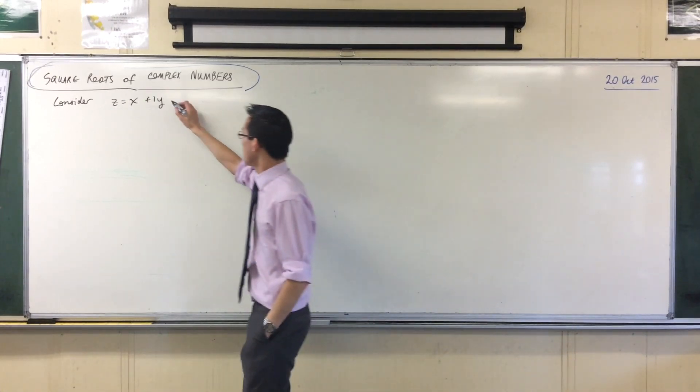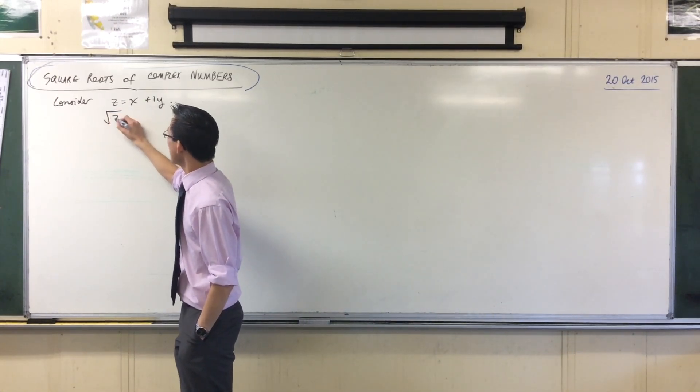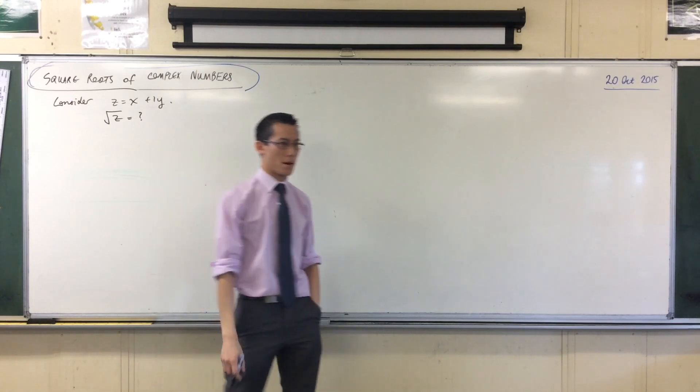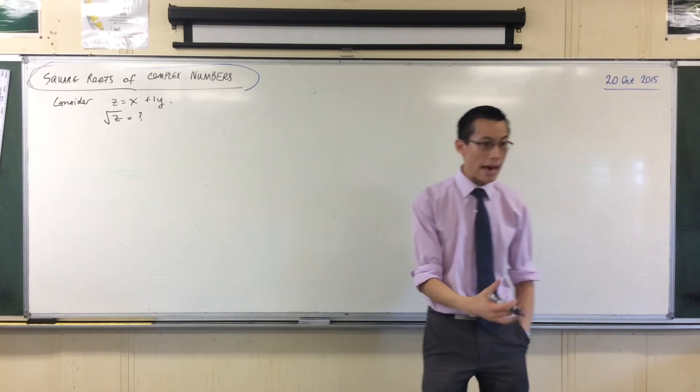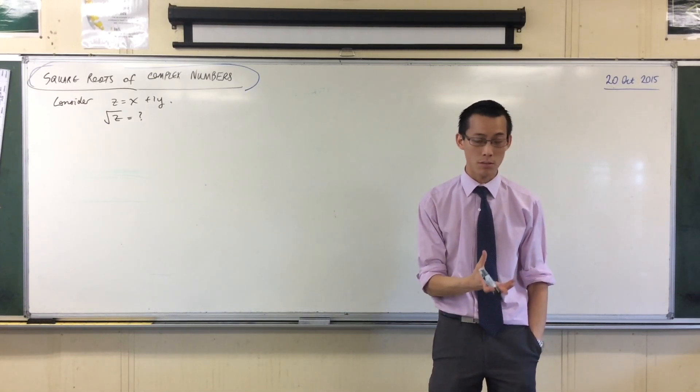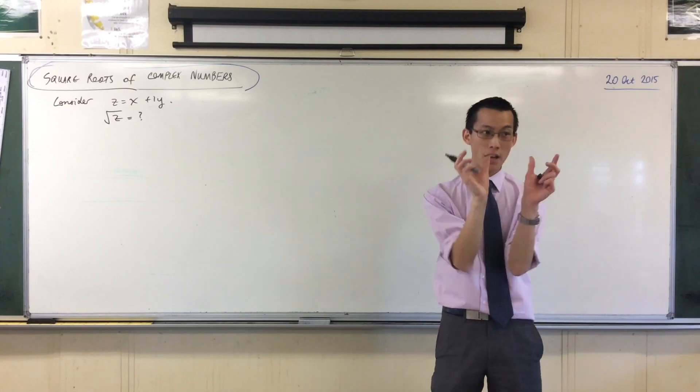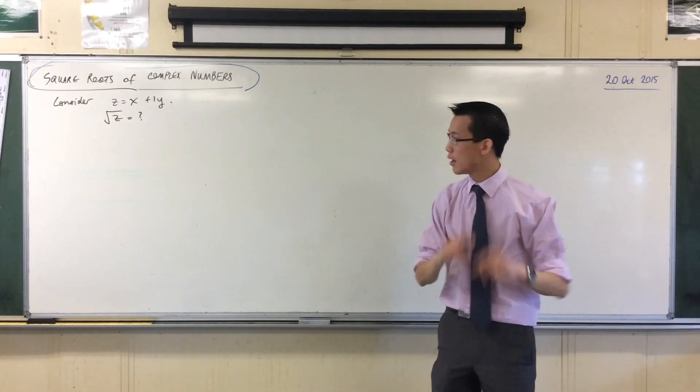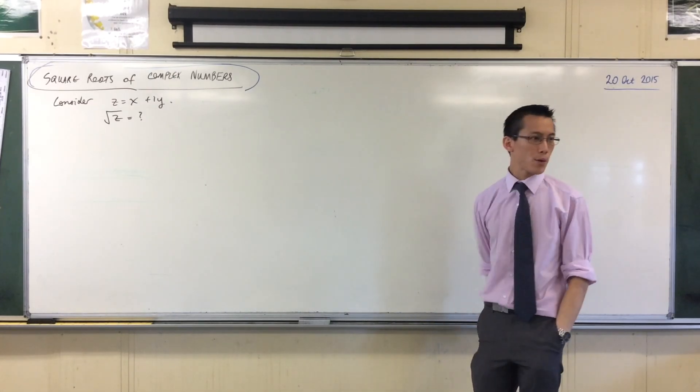If I've got this complex number, then my question is, what is the square root of this number? I know how to do multiplication of complex numbers. We talked about that before. It's just like multiplying two binomial terms. What would the square root of this number be?